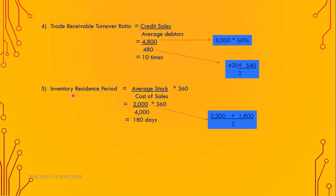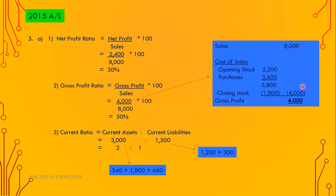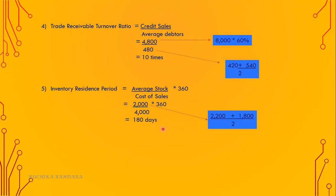Number five: inventory residence period equals average stock divided by cost of sales, into 360. In this question, assume 360 working days per year. Average stock is opening stock plus closing stock divided by 2 — which is 2,000. Cost of sales we already calculated as 4,000. The answer is 180 days.